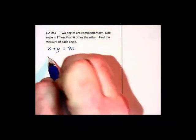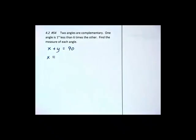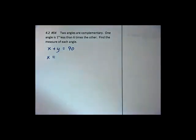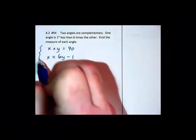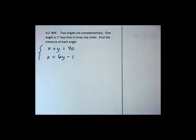One angle, I'll call that x, is 1 degree less than 6 times the other, 6y minus 1. There's that word less again that we're going to have to be careful of.